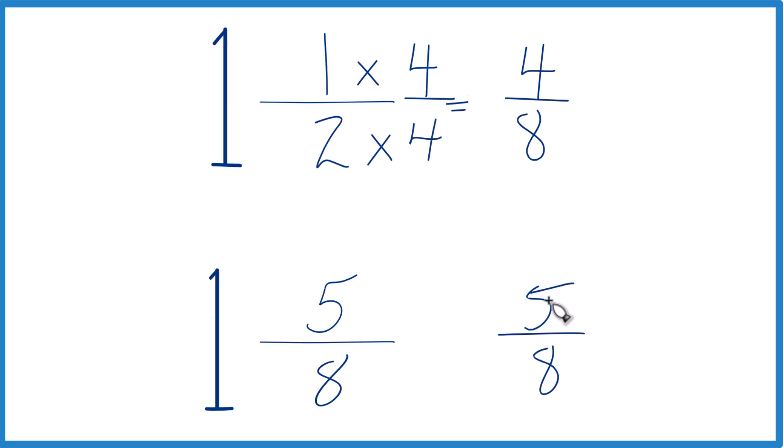Not a lot bigger, right? 5 minus 4 is 1, so only 1 eighth larger, but it's still larger. So answer to our question, 1 and 5 eighths, that is larger than 1 and 1 half by just 1 eighth.